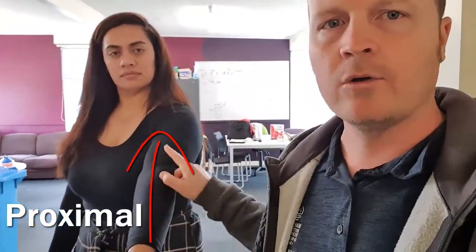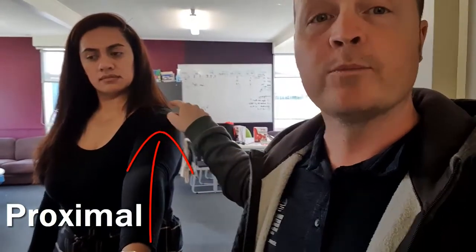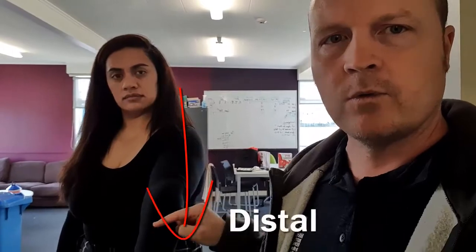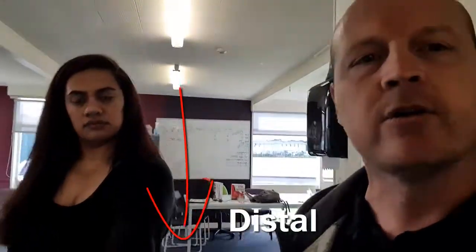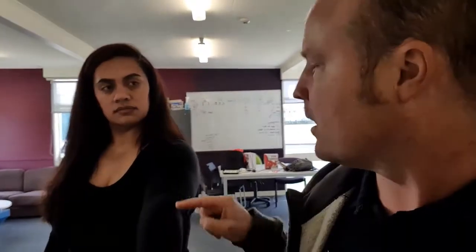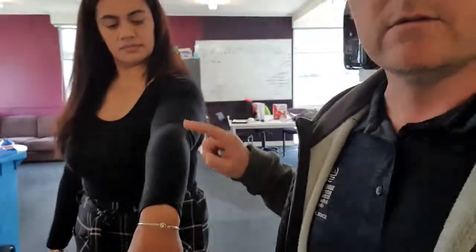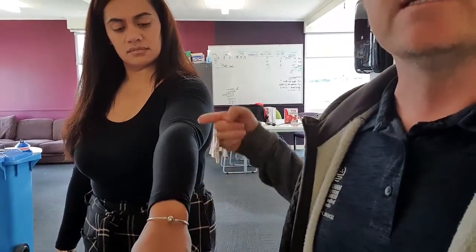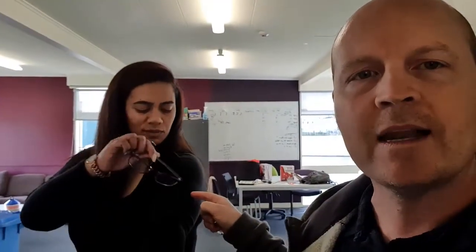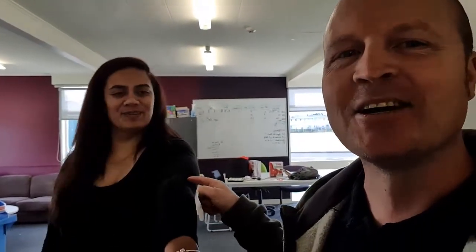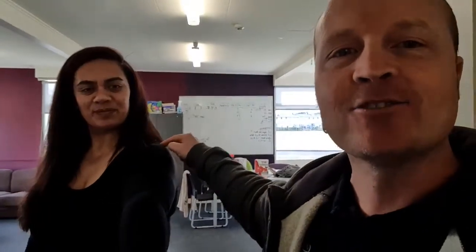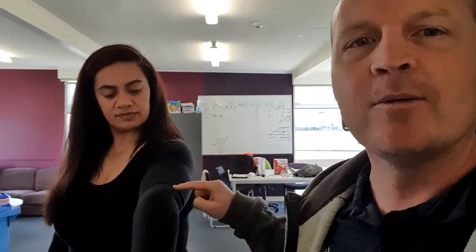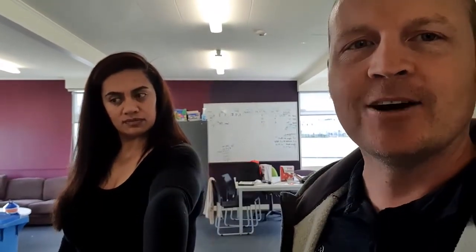We're not done — one more. The other thing we can talk about is when we're talking about down a limb — arms and legs. If something is closer to the torso, if it's a closer proximity, then it's proximal. And if something's further away, it's distal. So this is only on a limb — arms and legs. SAGE's elbow is proximal to her wrist, and SAGE's wrist is distal to her elbow. SAGE's shoulder is proximal to her elbow, and her elbow is distal to her shoulder. All right, now we're done.